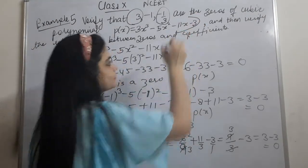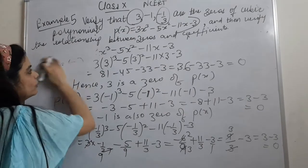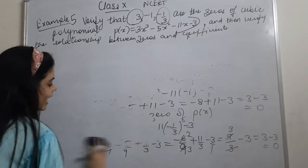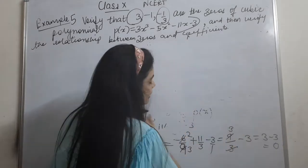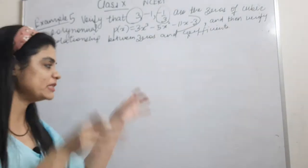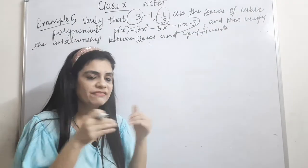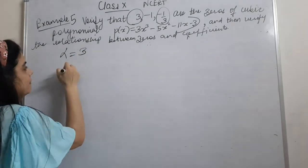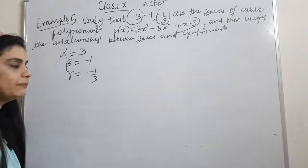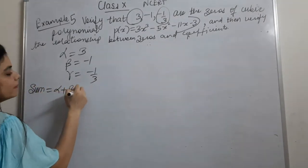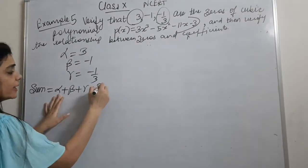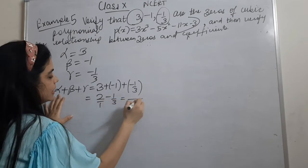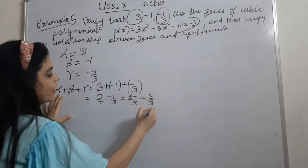Now verify the relationship between zeros and coefficients. Alpha is 3, beta is minus 1, gamma is minus 1/3. We calculate the sum: alpha plus beta plus gamma = 3 plus (minus 1) plus (minus 1/3) = 2 minus 1/3 = 6/3 minus 1/3 = 5/3.